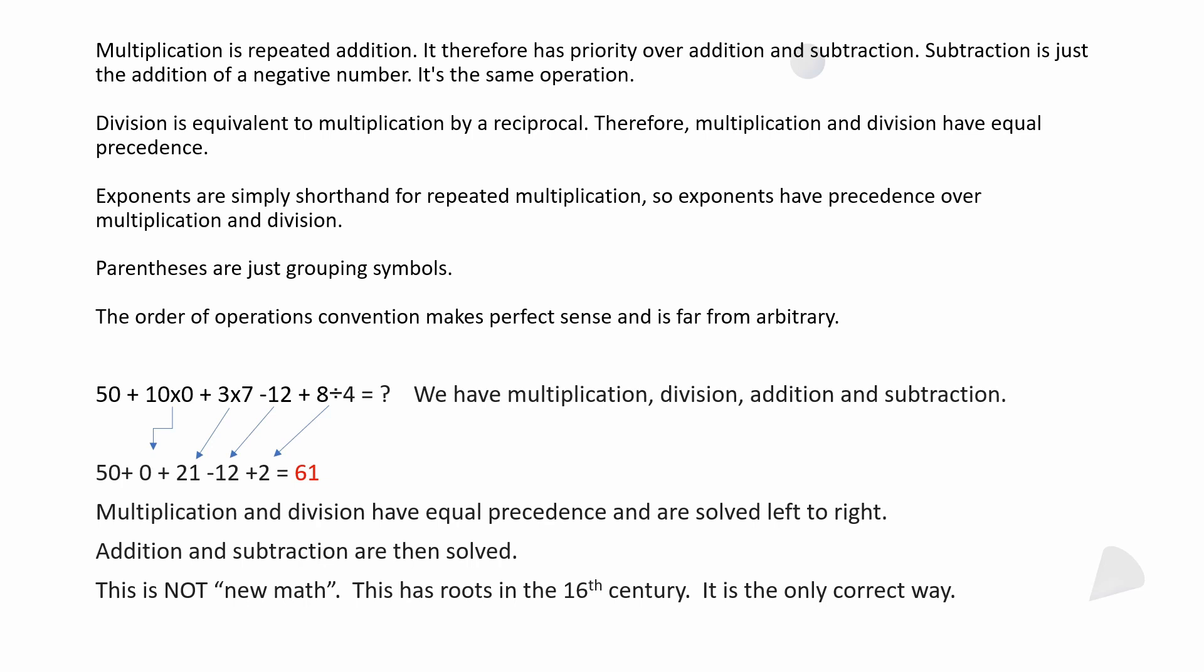We still have our minus 12 in there, plus 8 divided by 4. 8÷4 is 2. So if you look at the arrows, you can see where we've solved the multiplication and division. So you've got 50 + 0 + 21 - 12 + 2 = 61.